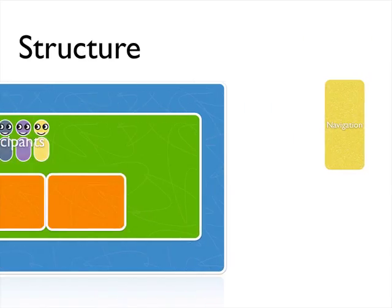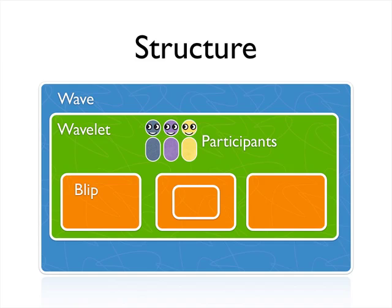Google Wave has an interesting structure. It operates by using Wavelets. A Wavelet is a container for participants, and each Wave has one or more participants who may be humans — basically the normal Wave users — or robots. Robots are a form of extension: automated agents that perform a specific function, such as providing poll results or linking usernames to Twitter. One of your participants can also be public. If you add public at a.gwave.com to a Wave, this allows anyone to participate in your Wave.